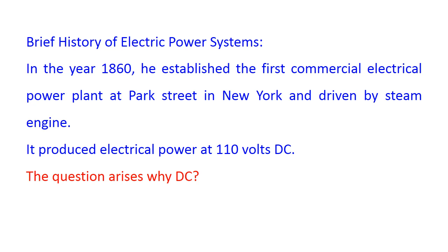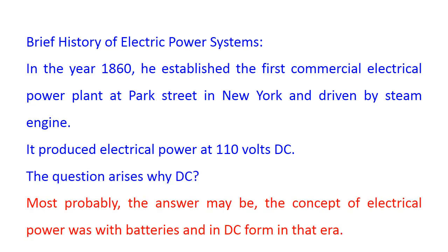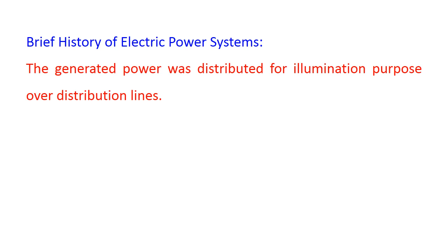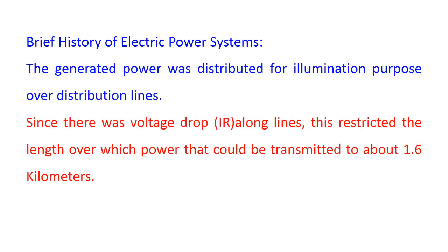The question arises: why was electrical power produced in DC form? Most probably, the answer is that the concept of electrical power originated with batteries and in DC form in that era. The generated power with DC generators was distributed for illumination purpose over distribution lines. Since there was a voltage drop — that is, IR drop — along the distribution lines, this restricted the length over which power could be transmitted to about 1.6 kilometers.